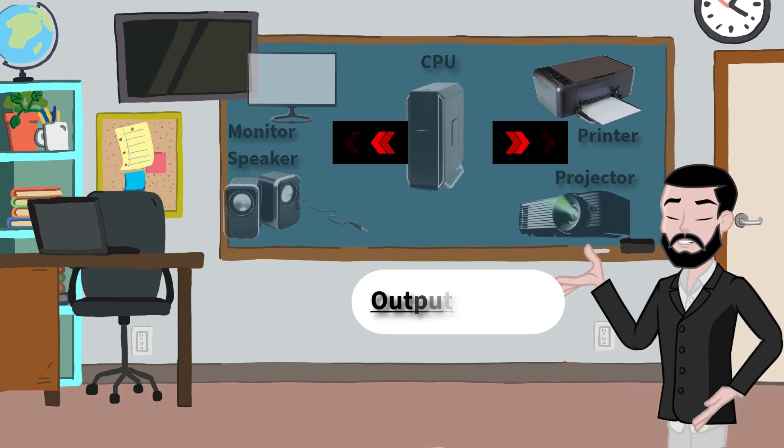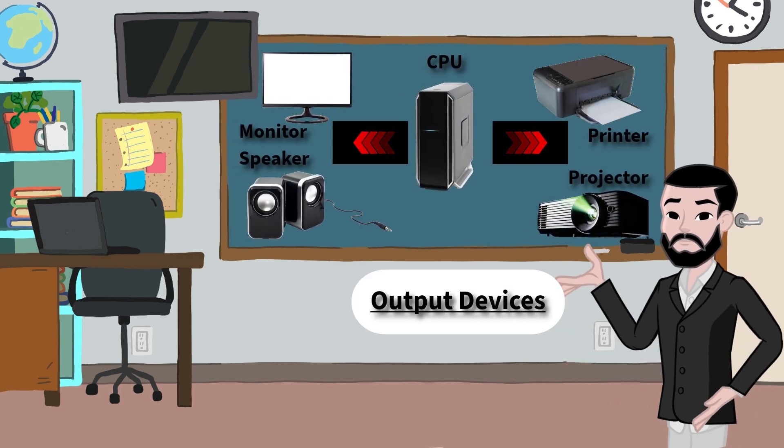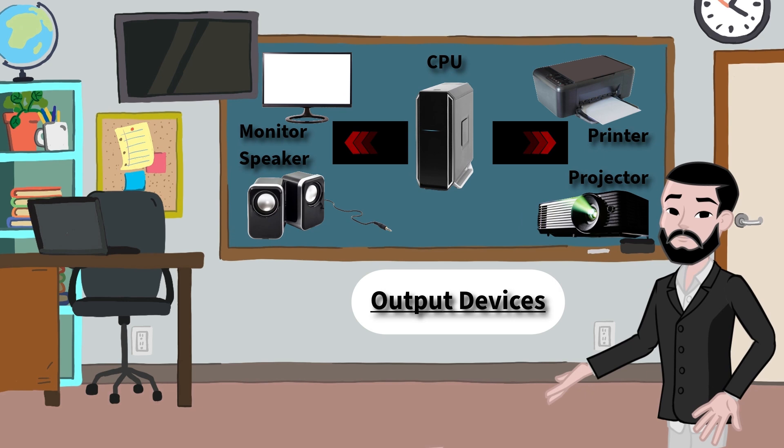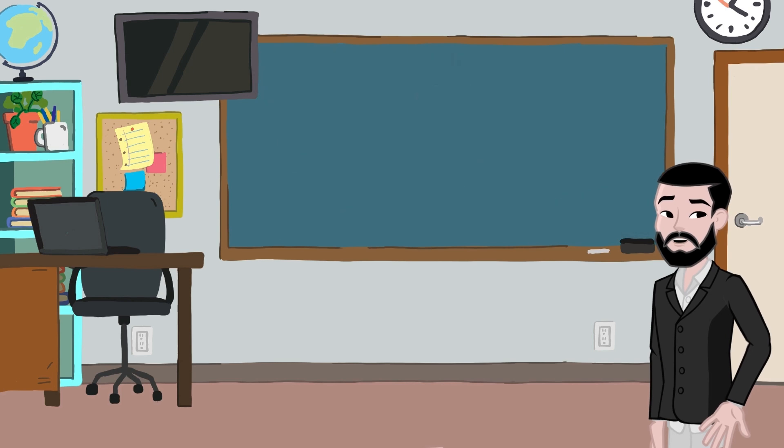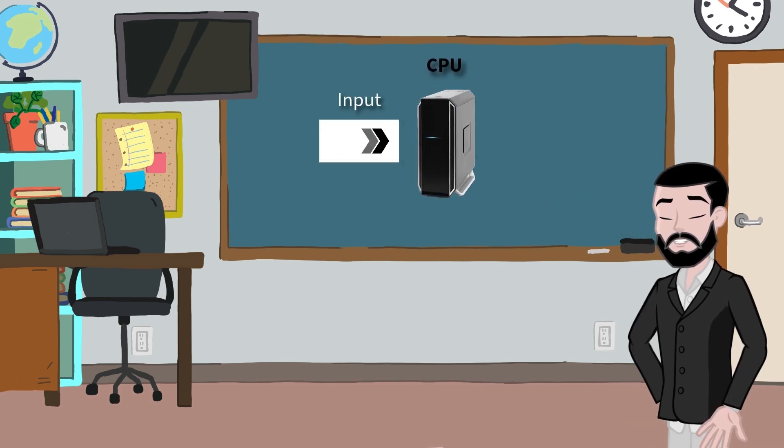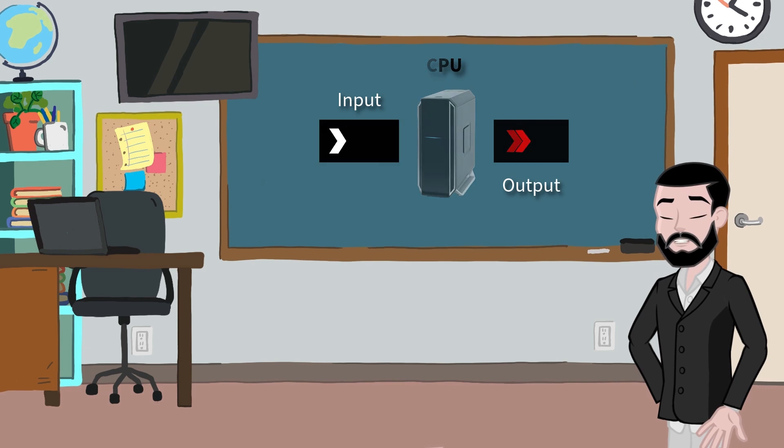Output devices show you the results. These include monitor, speakers, printer, projector. Remember, input goes into the computer, and output comes out of the computer.